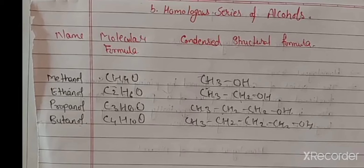First, CH4 — methane is already known as CH4. This CH4 combines with OH group, forming CH3OH, which means methanol. Its molecular formula is CH4O and structural formula is CH3OH.